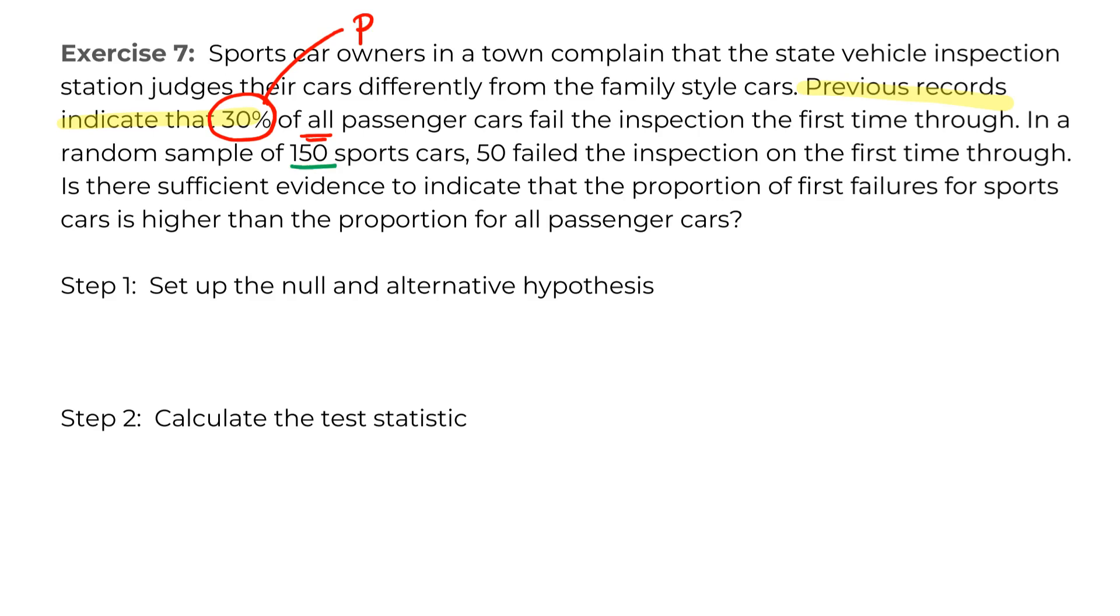In a random sample of 150 sports cars, now we have our n, we know we're dealing with our evidence. 50 of them failed inspection the first time through, so there's our number of successes in our sample of 150. Is there sufficient evidence to indicate that the portion of first failures for sports cars is higher than for all passenger cars? So you can see all the stuff in red was about passenger cars, and we're comparing sports cars, which is our random sample here, to those passenger cars. So we are going to treat this like a real P, like it's the real deal, and we're going to use it as our claim to value.